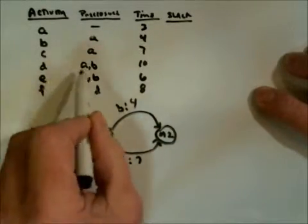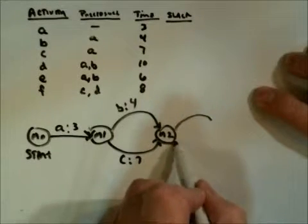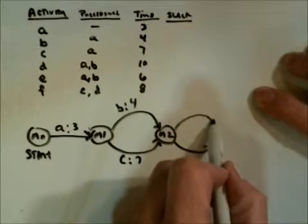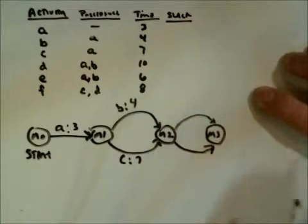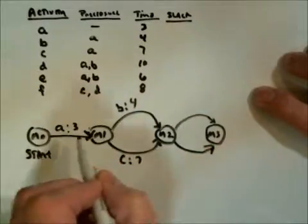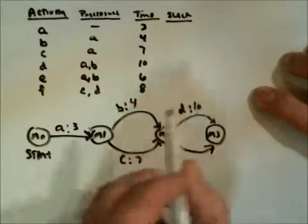Both A and B have to be done before D and E can be done, which again lends it to a similar type picture. Here, this is Milestone number 3. I'll put C, let's see, D here, which is 10 units of time.